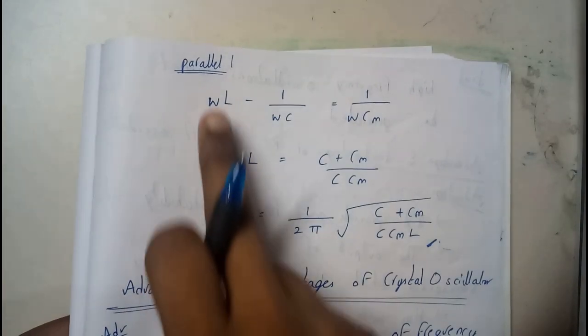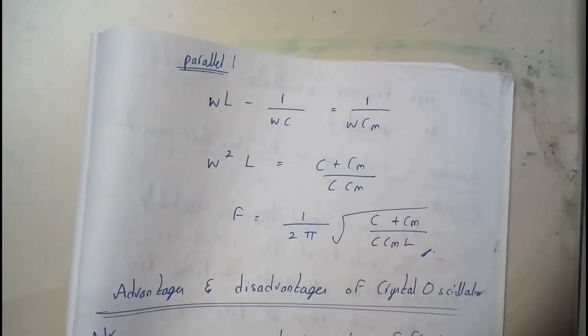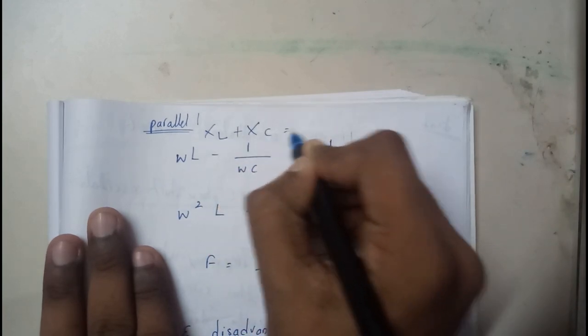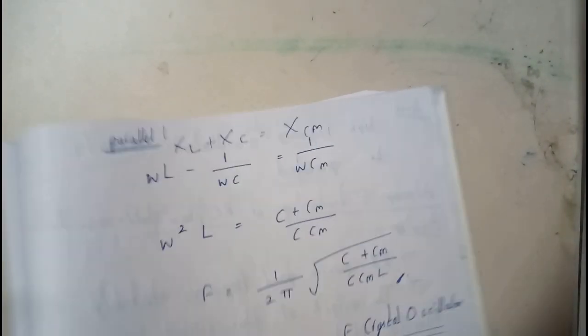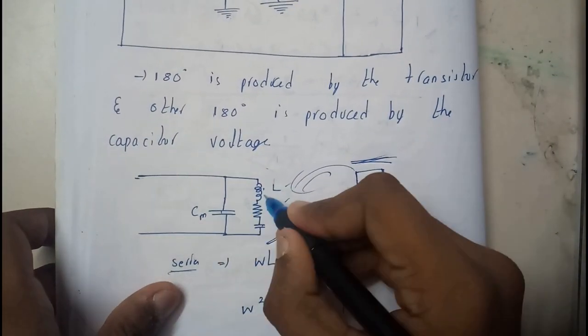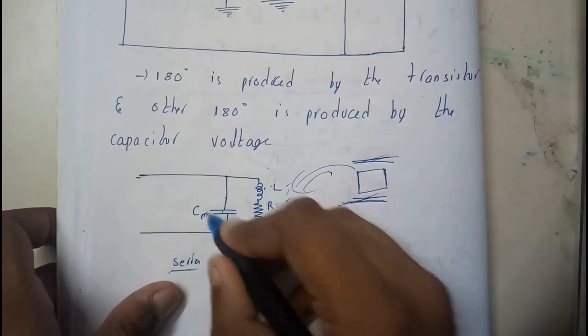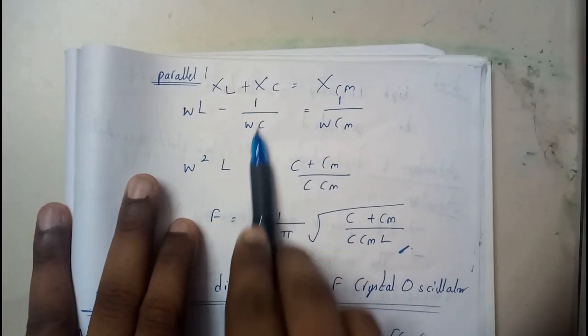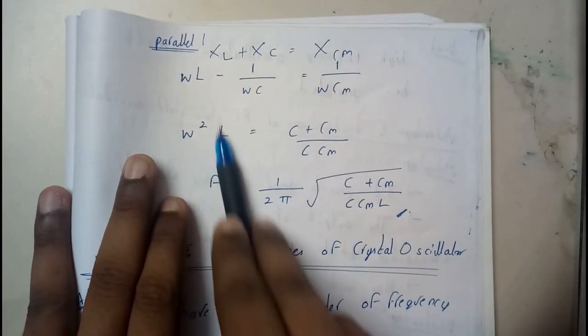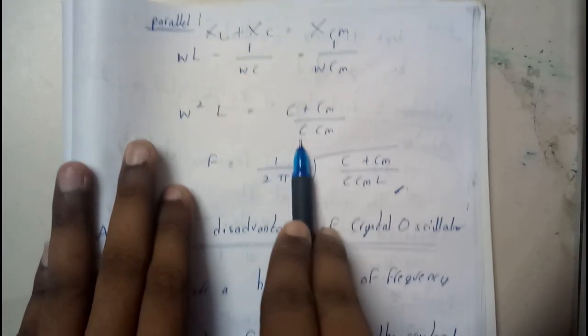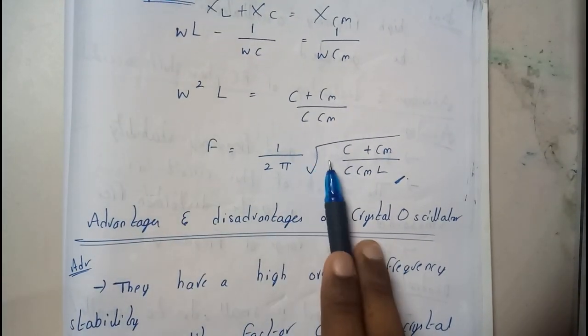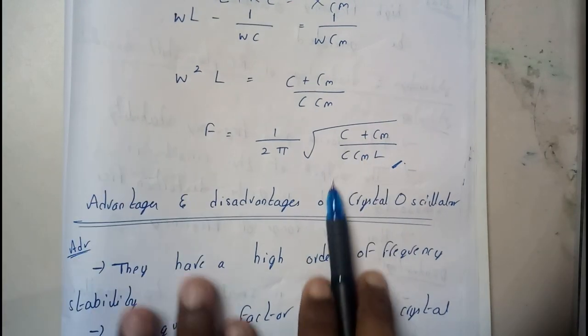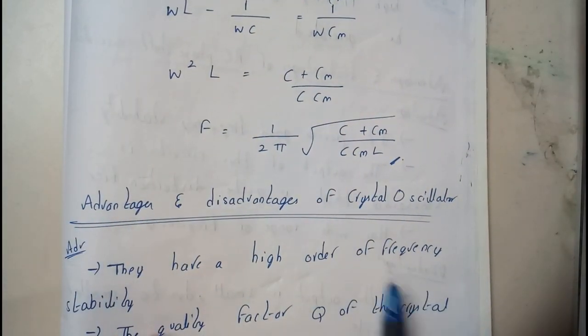Further moving on to the parallel configuration: XL plus XC equals XCm. We are doing for these three; previously we did for L and C, now for these three. This gives us wL minus one by wC equals one by wCm, so w squared L equals C plus Cm by C times Cm. Therefore, f equals one by 2π square root of C plus Cm by C times Cm times L.